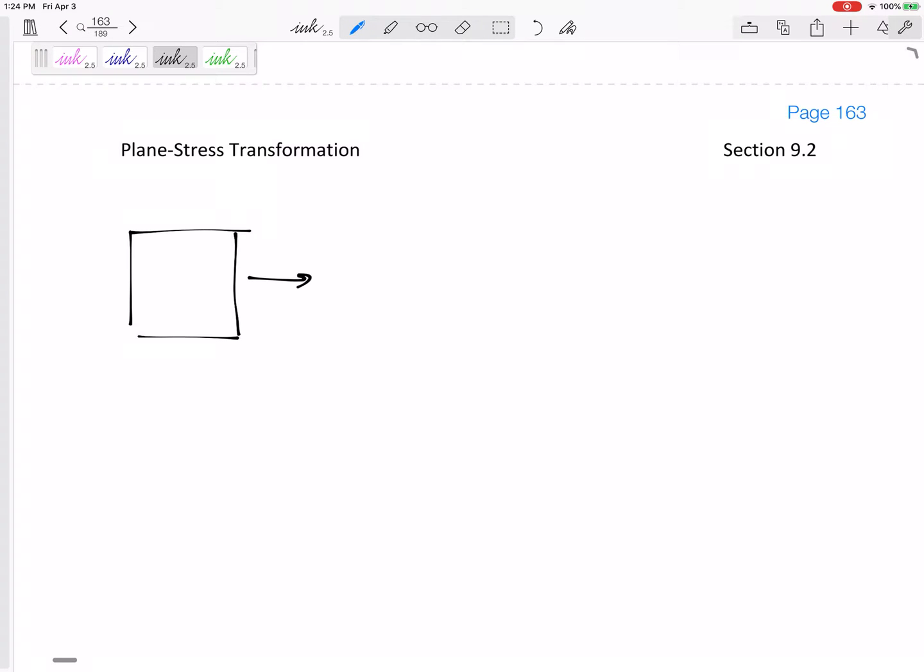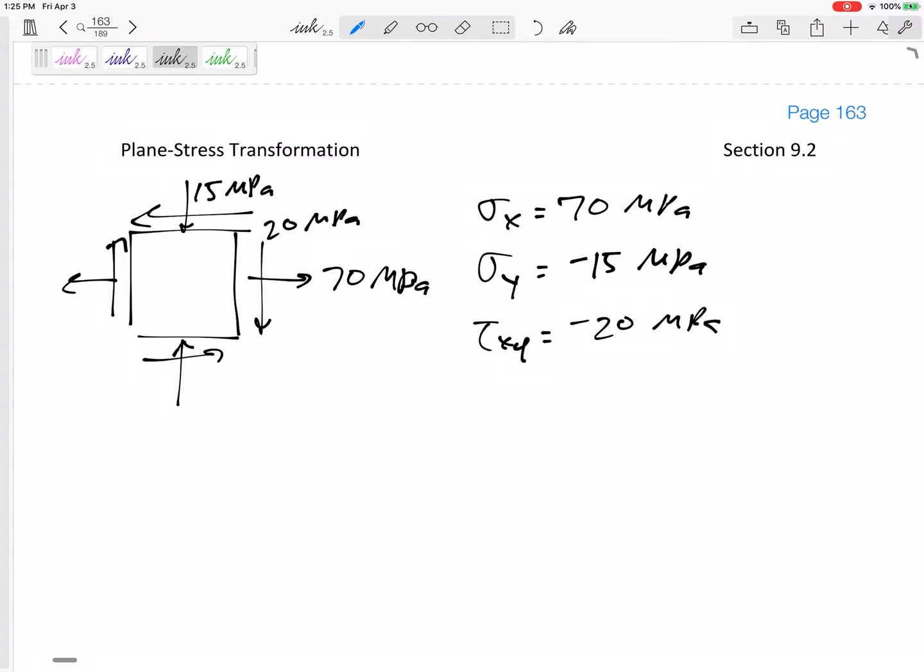So let us draw just a real quick example. If we had some element that had a sigma x of 70 MPa, a sigma y—do you see this is negative 15 MPa—and a tau, if this is 20, that would be negative 20. I like to write out here just to emphasize: my sigma x is 70, my sigma y is negative 15, my tau is negative 20. Why is it negative? Because it's not pointed to that top right corner; it is pointed towards these corners, so it's a negative shear stress.